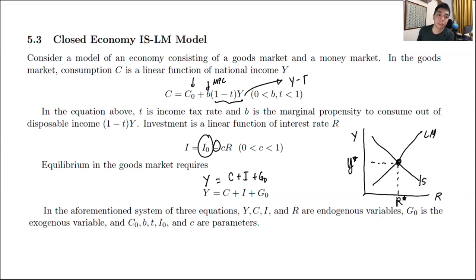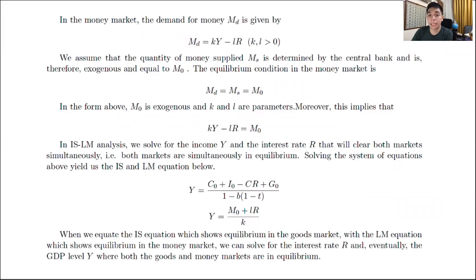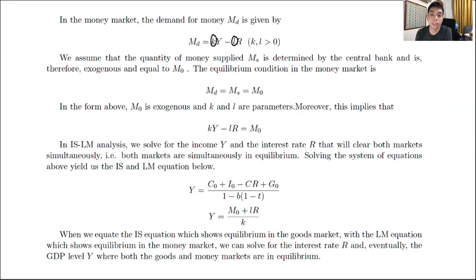In the money market part, the demand for money MD equals K times Y minus L times R, where K and L are both greater than zero. The money supply MS is determined by the central bank and is therefore exogenous. The equilibrium condition for the money market is that money demand equals money supply, so M naught is exogenous and K and L are parameters.